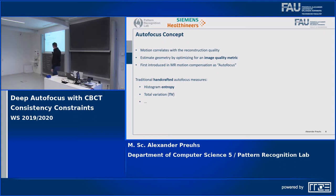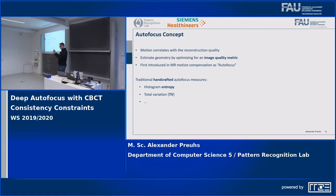This idea was first presented in MR motion compensation, using histogram entropy. The idea behind histogram entropy and total variation is similar to iterative reconstruction: we assume homogeneous objects, and motion distorts those homogeneous regions with blurs and double edges. The gray values of the histogram become more random, increasing entropy, and total variation increases due to more gradients.